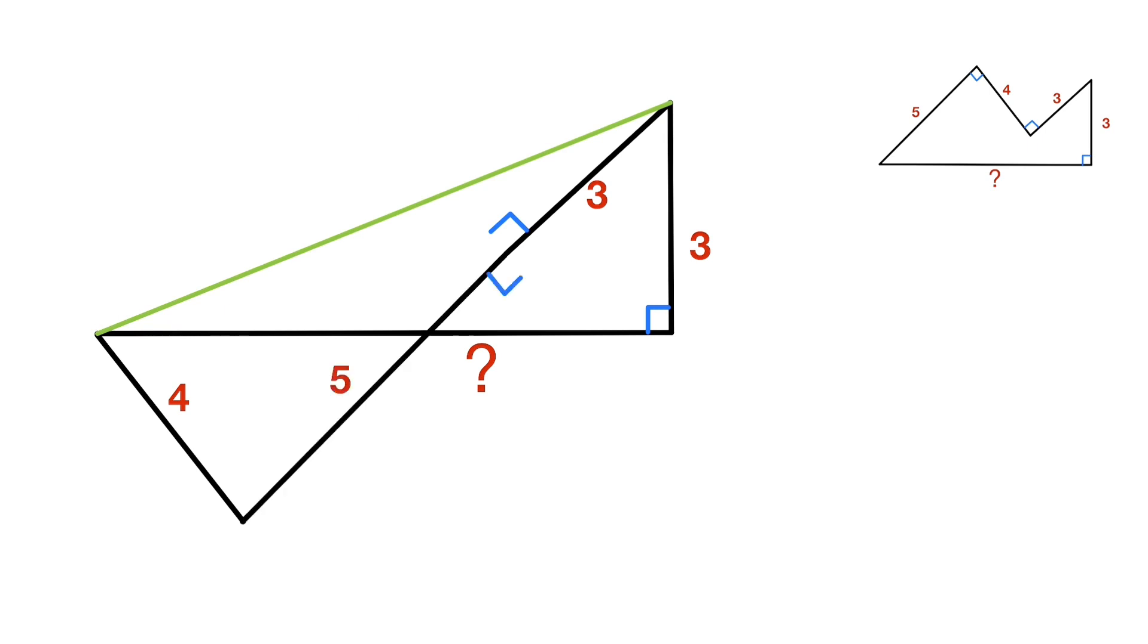So this is a right angle triangle, right? And the length of this side is 5, and the length of this side is 3. So the total is 5 plus 3 which is 8. That means this side is 8.